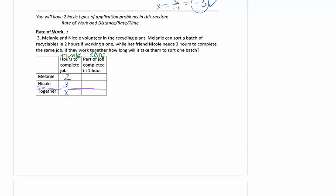So this is where we're going to now use that idea of one over X. One over the time is what their rate is. So Melanie completes a half of the job in one hour. Nicole completes a third of the job in an hour. Together, and this tends to throw people off, but it's not any different. It would be one over X. We will always set these problems up the same exact way.